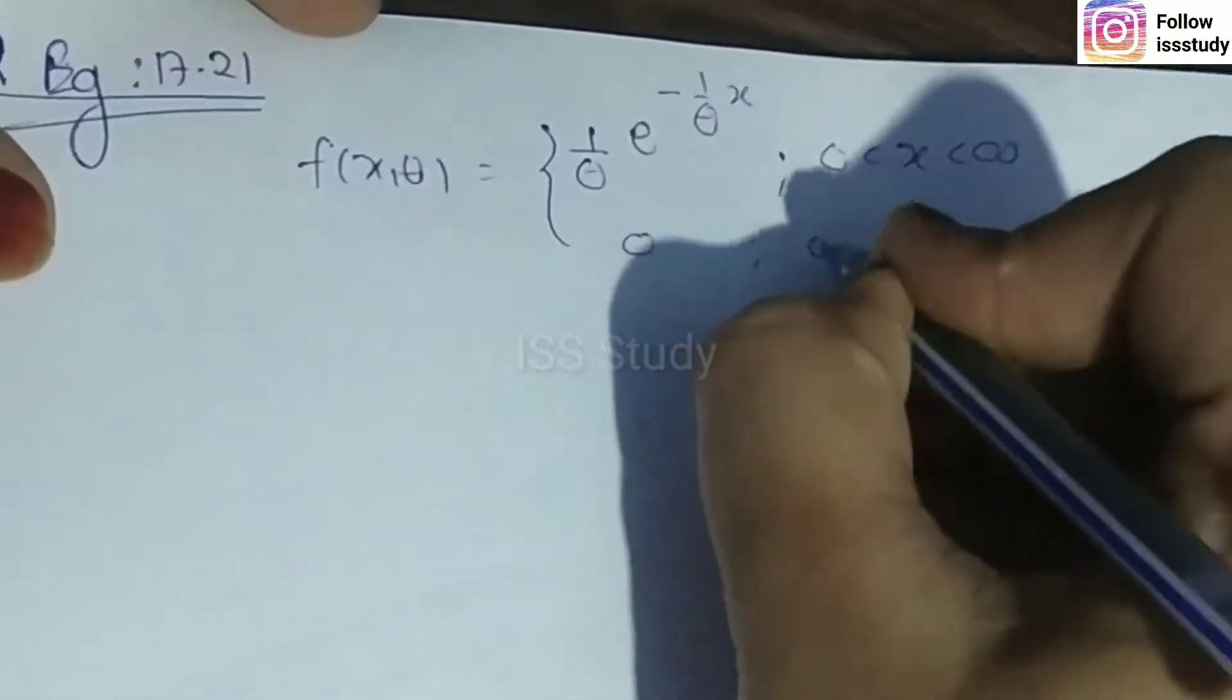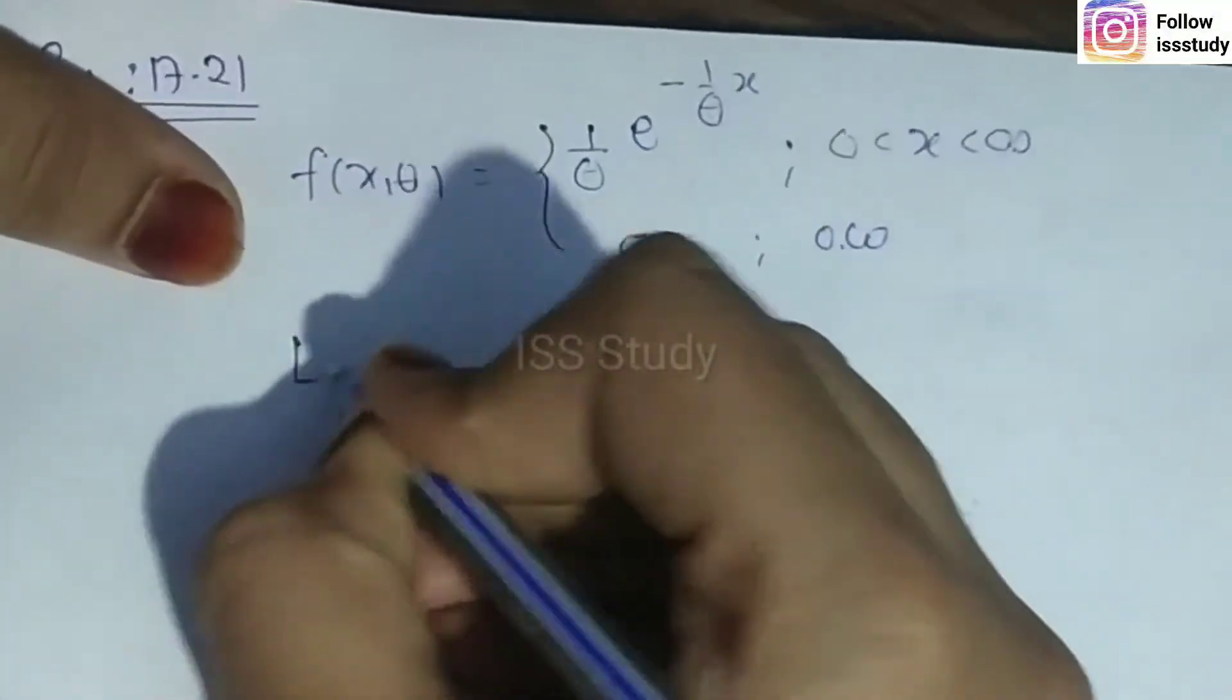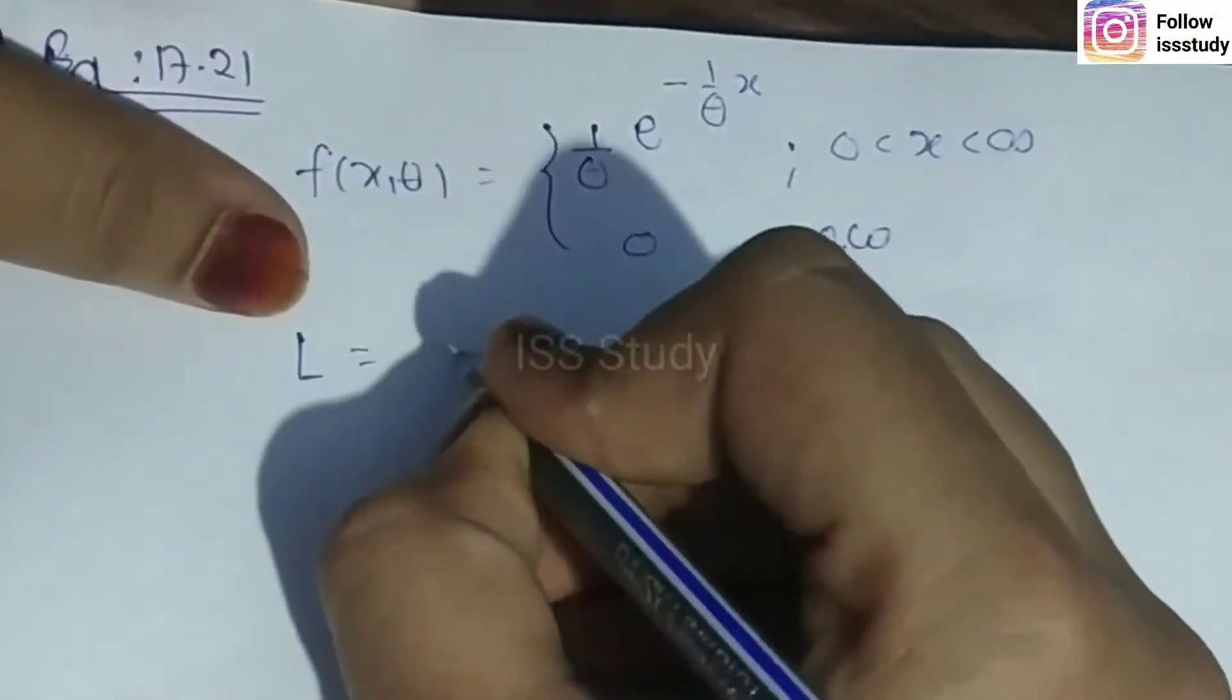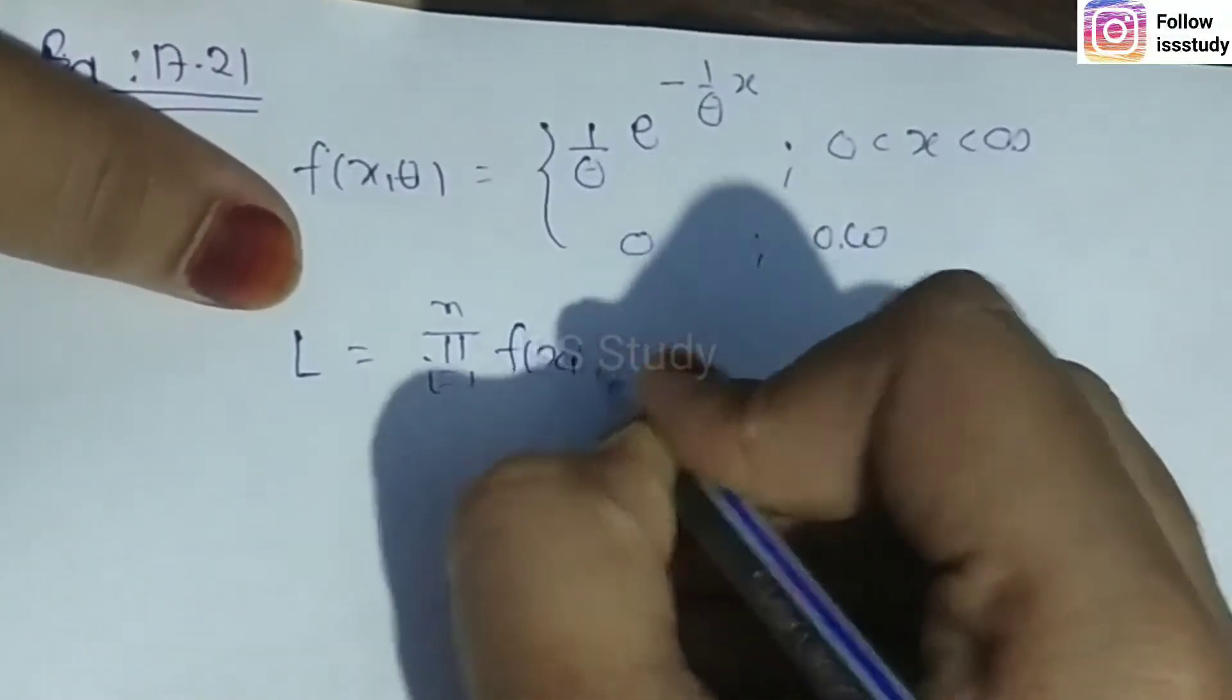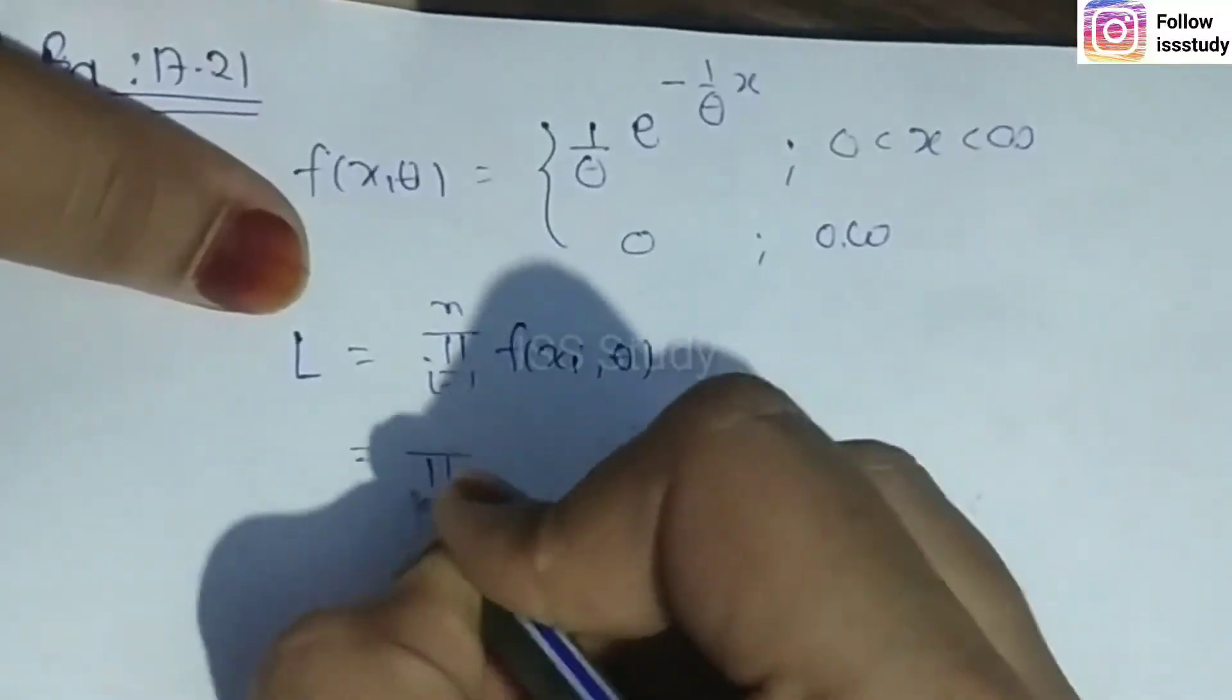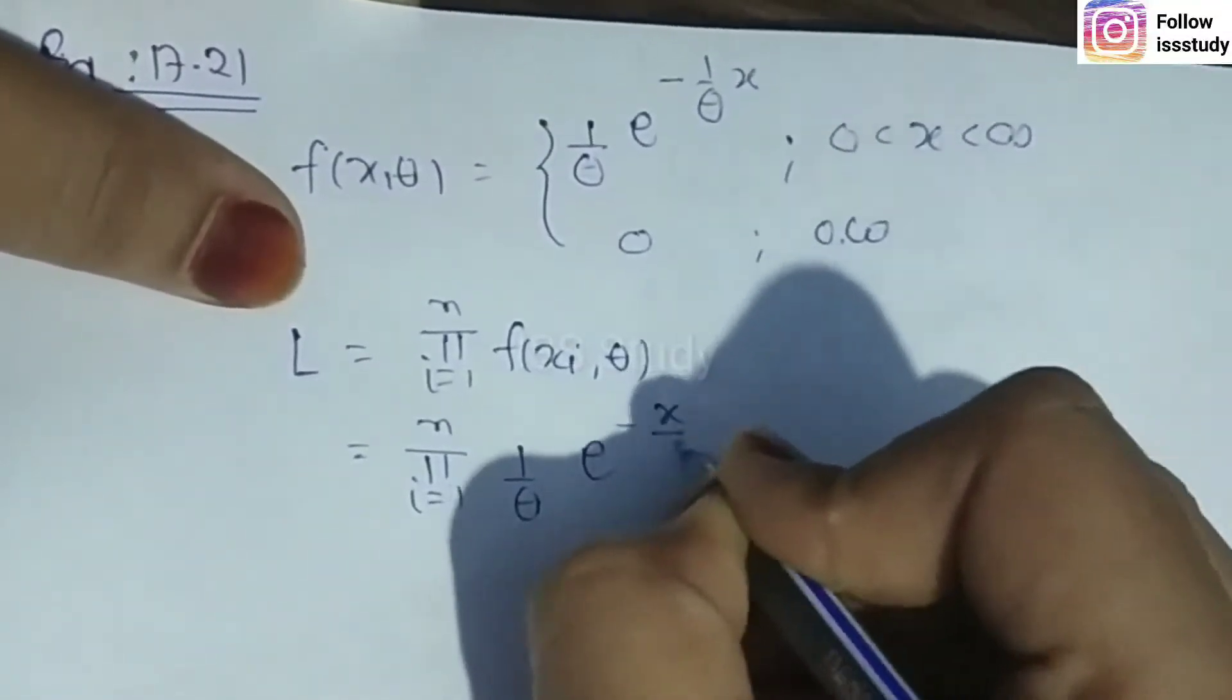First, we need to find the likelihood function. The likelihood function is written as: L(θ) = π (i going from 1 to n) of f(xi, θ) = π (i=1 to n) (1/θ) e^(-xi/θ).